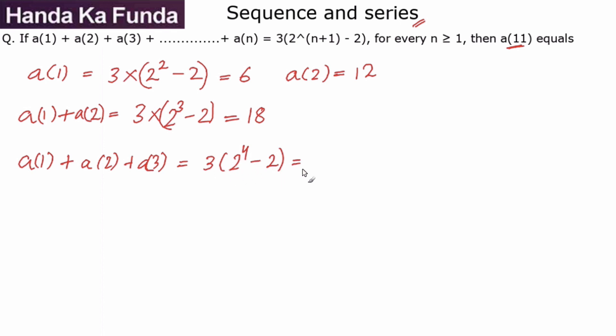From 42, if you remove a1 plus a2, which means from 42 if you remove 18, you get the value of a3 as 24. Now do you notice a pattern? What are the values? 6, 12, 24.